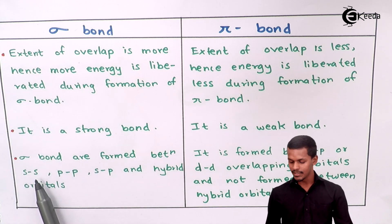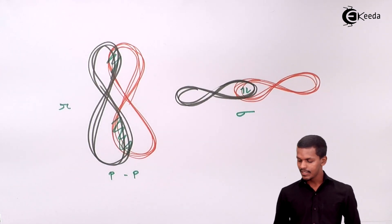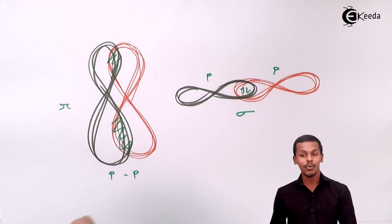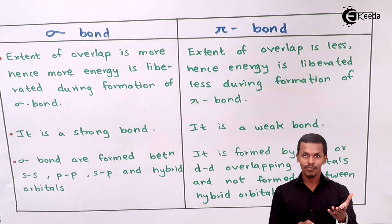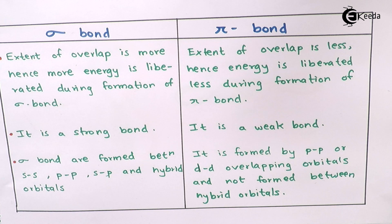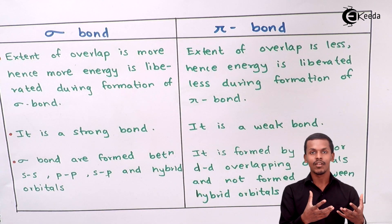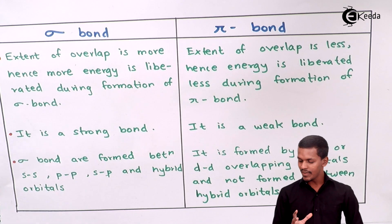Sigma bonds are formed between s-s, p-p, s-p, and hybrid orbitals — as seen in the PP coaxial overlap forming sigma, and the s-p overlap in HF forming sigma. Pi bond is formed by p-p and d-d lateral overlapping, but it is not formed between hybrid orbitals. Hybrid orbitals are formed by the mixing and recombining of different atomic orbitals on the same atom, and therefore there is an important difference here.